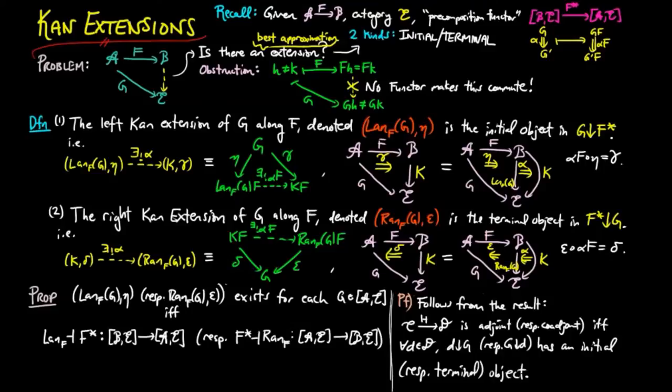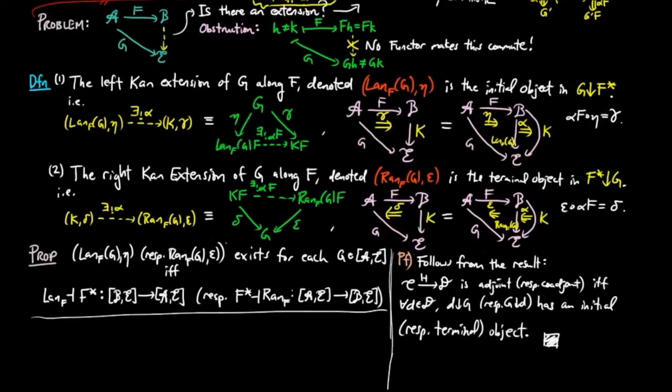The proof we gave in that video then shows that the construction Lan_F, respectively, Ran_F, is the left, respectively, right adjoint to the pre-composition functor.